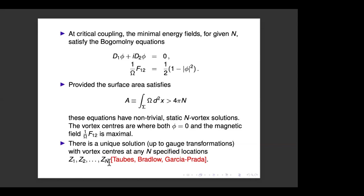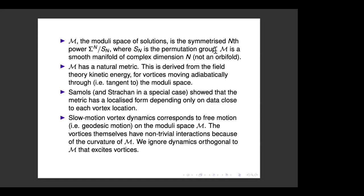The vortex centers z₁ through zₙ can coincide, giving a multiple vortex at that location. Importantly, they're indistinguishable physically — all vortices are the same — which means the moduli space is the set of N points quotiented by the permutation group. The moduli space of solutions is thus the symmetrized Nth power of Σ: Σ^N divided by the permutation group S_N. One might worry this gives an orbifold, but a remarkable feature of points on a two-dimensional surface is that this quotient is still smooth.